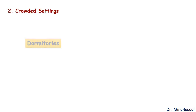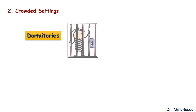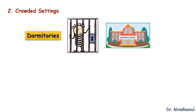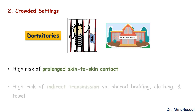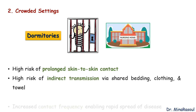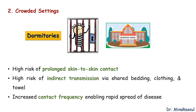Factor number 2 affecting prevalence of scabies is crowded settings. Crowded settings like dormitories, prisons, refugee camps, and long-term care facilities are high-risk environments for scabies transmission because in these settings there is increased risk of prolonged skin-to-skin contact, increased risk of indirect transmission via shared bedding, clothing, and towels, and increased contact frequency enabling rapid spread of disease and complicating outbreak control, particularly in settings with inadequate hygiene infrastructure.